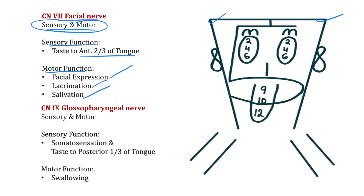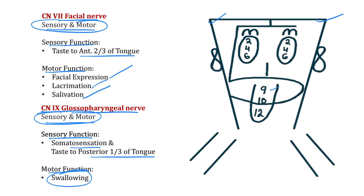Cranial nerve 9, the glossopharyngeal nerve, is a mixed type cranial nerve — both sensory and motor. Its sensory functions include somatic sensation and taste to the posterior one-third of the tongue. Its motor function is important for swallowing.